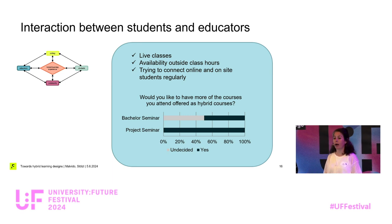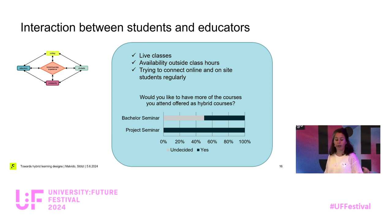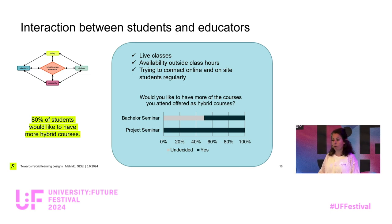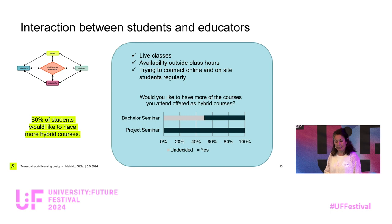When we come to our last question in the survey, we asked the students: would you like to have more hybrid courses after this experience? In our project seminar, all students said yes. But in the bachelor seminar, around 50% of the students were undecided. From our numbers, we conclude that in general 80% of the students would like to have hybrid courses. There is still a group of students that are undecided. But we did not find any student that said no, this is not for me.